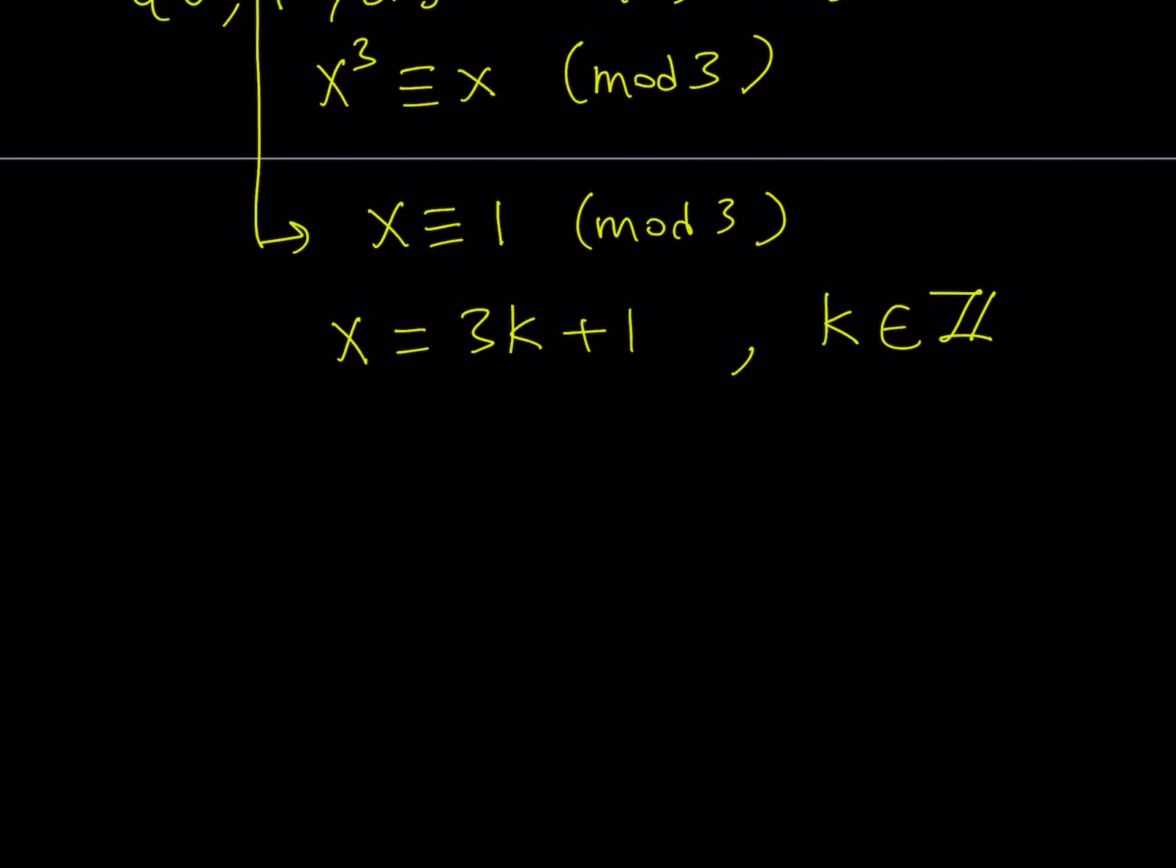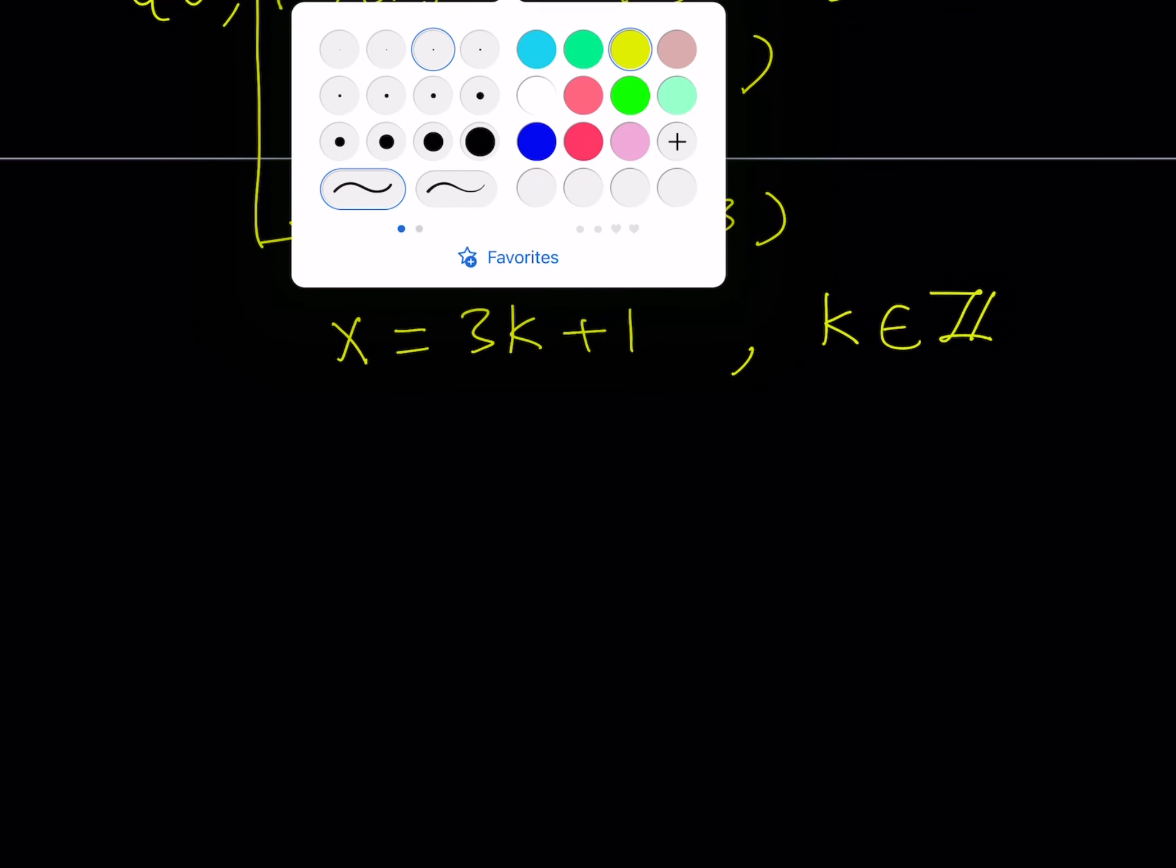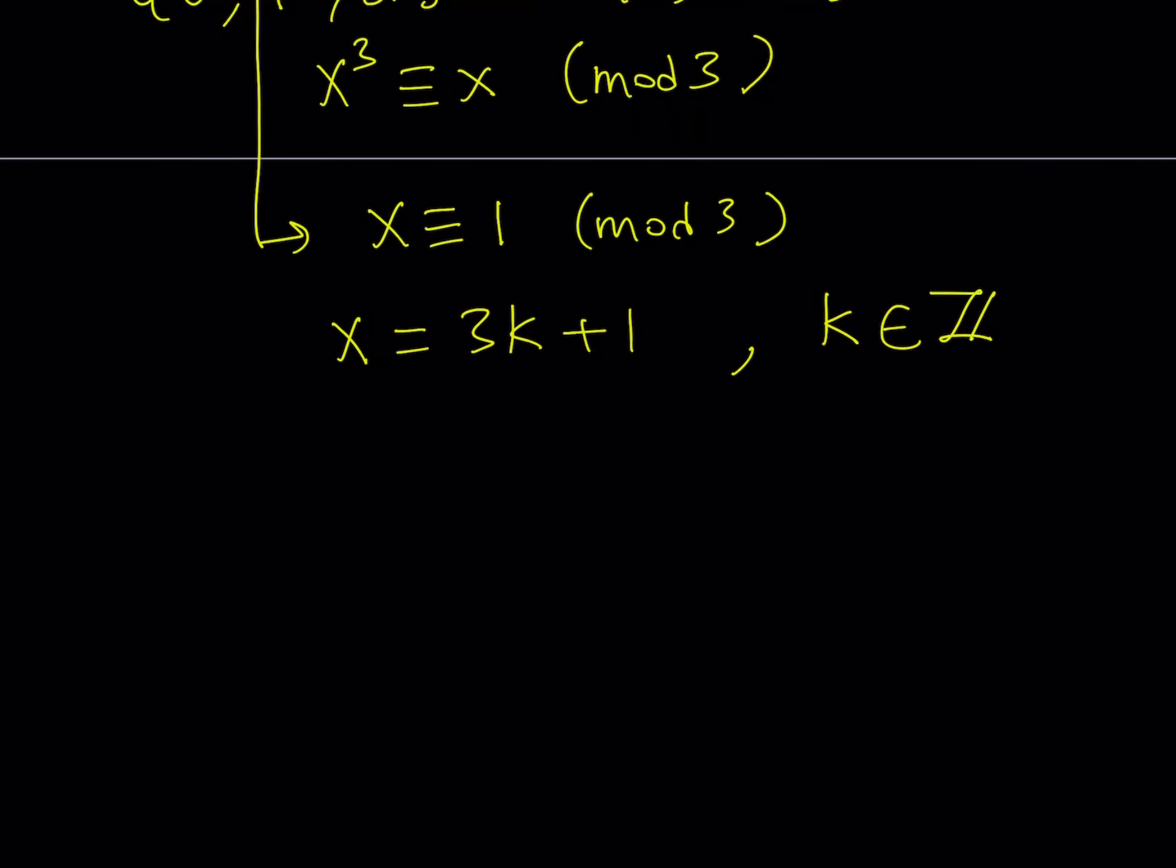And, what I can do is, my favorite method, substitution. So, let's go ahead and use substitution here. Substitution works like the following. Our original problem, remember, was 117y³ - x³ = 5. I'm going to now replace x with 3k + 1.